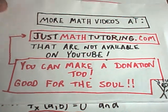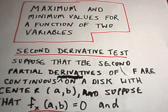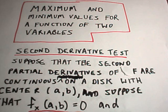In this video I'm going to talk about finding maximum and minimum values of a function of two variables. And what we're going to use is the second derivative test. The second derivative test says the following.